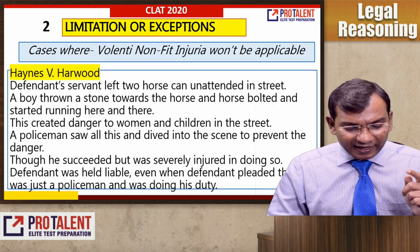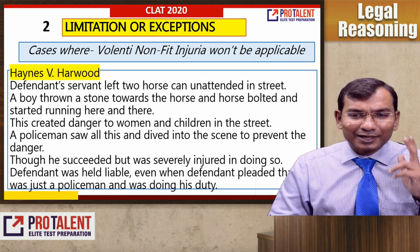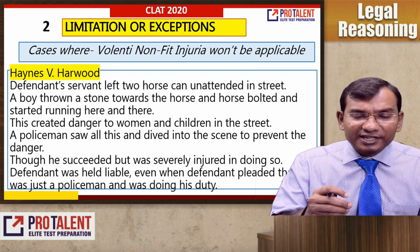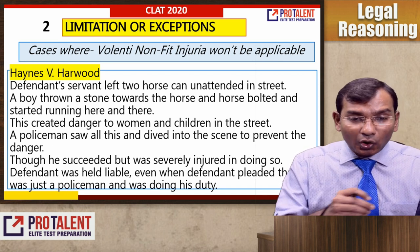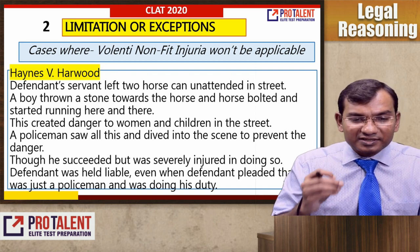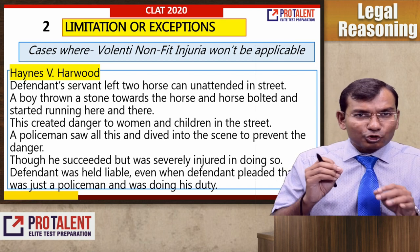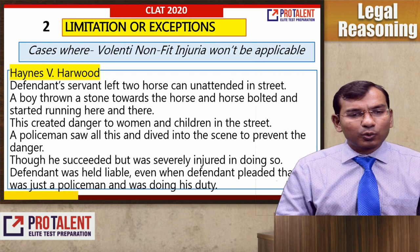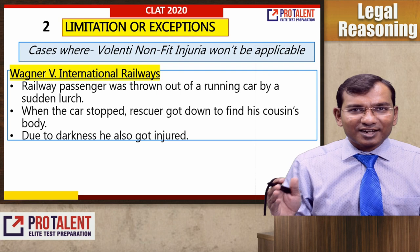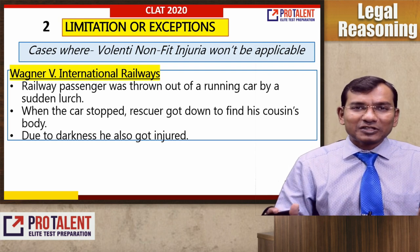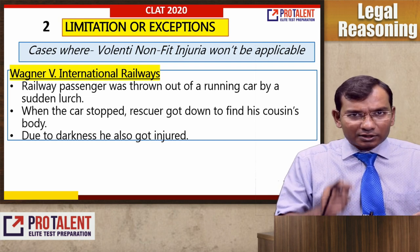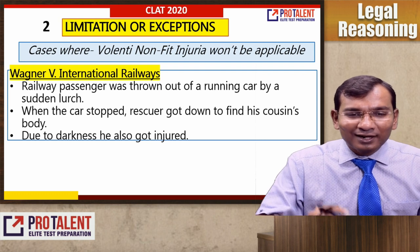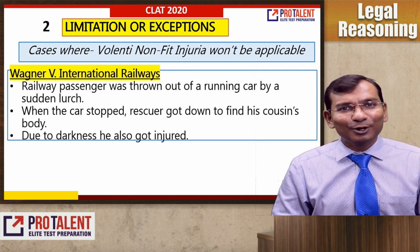Famous rescue cases: Haines versus Harwood — the defendant's servant left two horses unattended in the street. A boy threw a stone toward a horse, which bolted and started running, creating danger to women and children. A policeman dived in to prevent the danger. He succeeded but was severely injured. The defendant was held liable for the policeman's injuries. Another case: Wagner versus International Railway — a railway passenger was thrown out of a running train by a sudden jolt. When the train stopped, a person went to rescue him in the darkness and was injured. The railway was held liable.